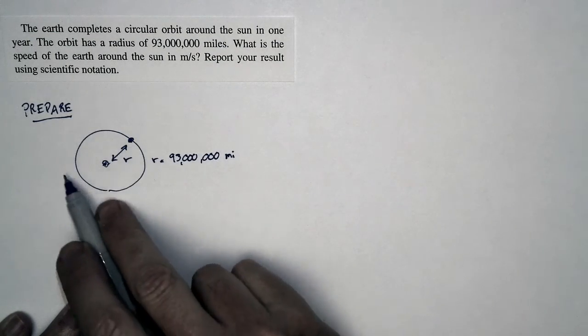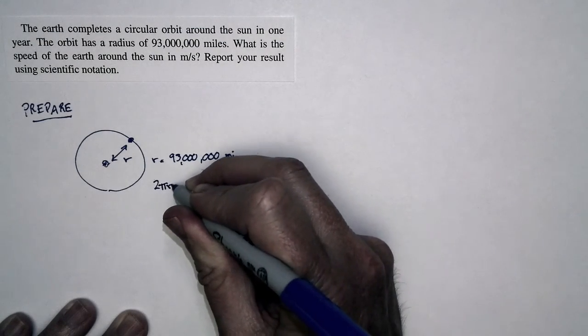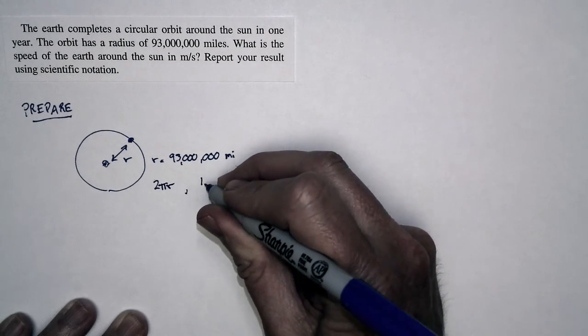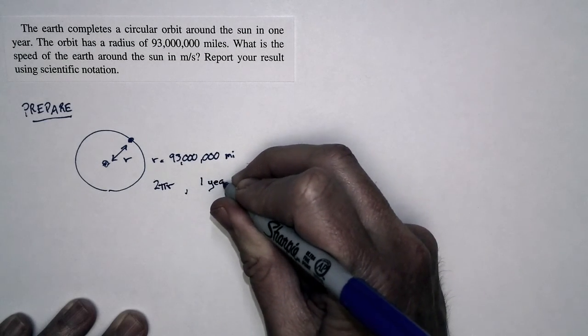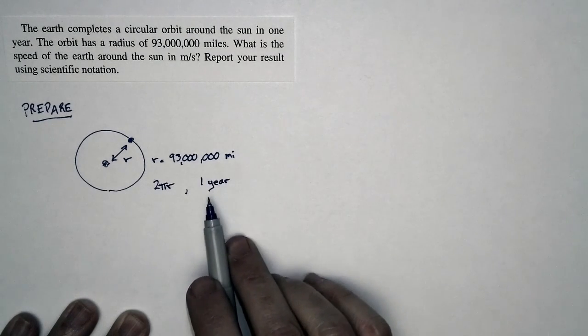The length of the orbit, the distance that the Earth travels, is 2πr. The amount of time it takes to complete that orbit is, of course, one year. That's the definition of a year. So the speed is this many miles per year.